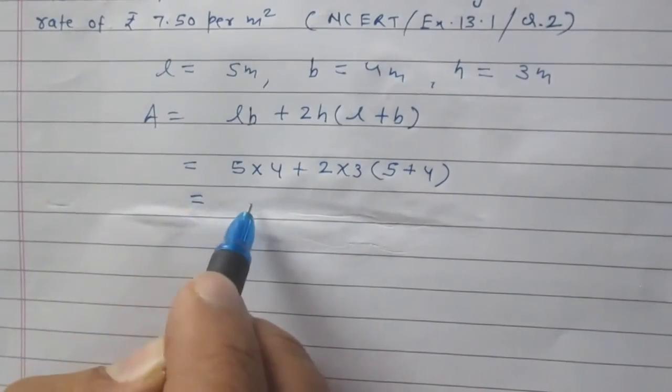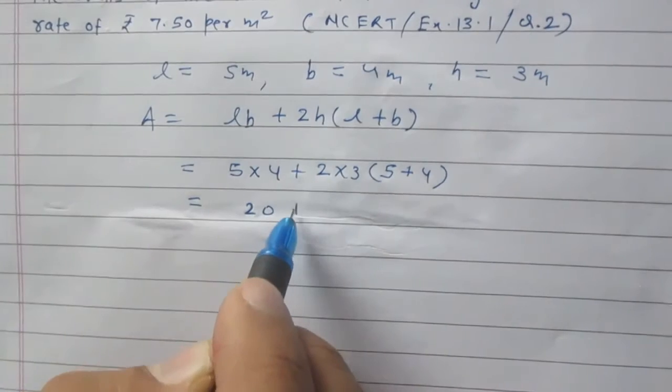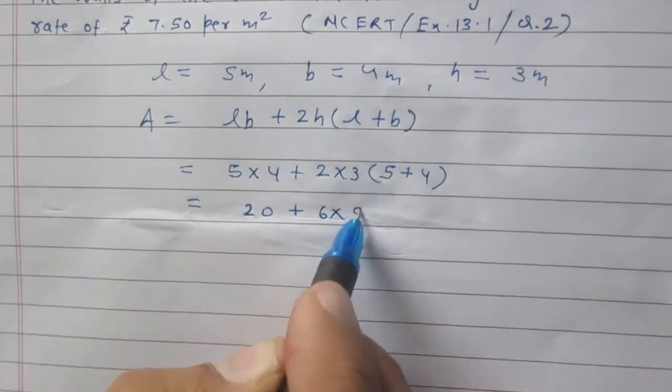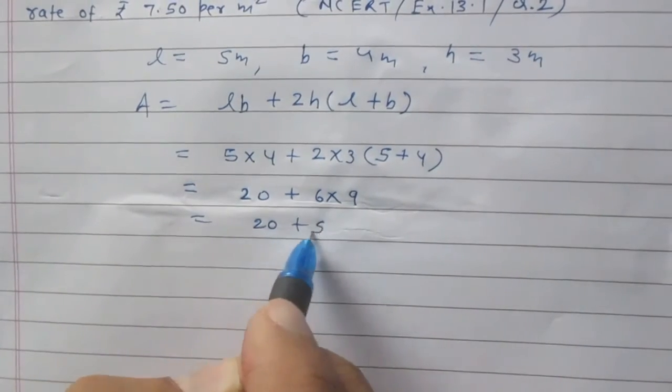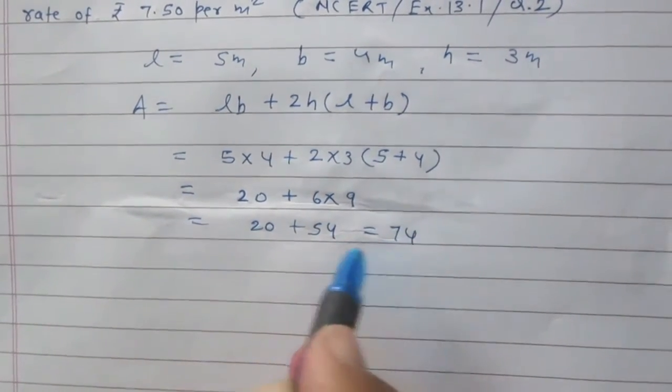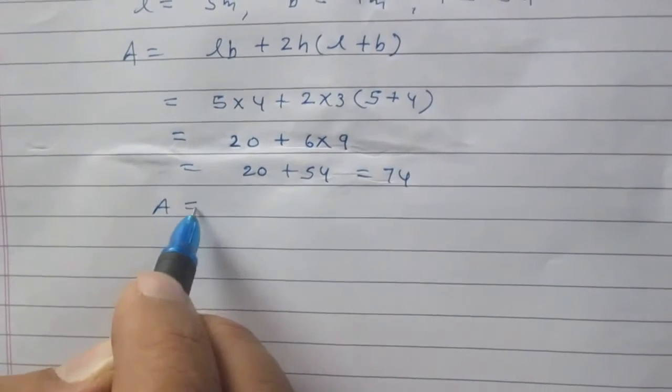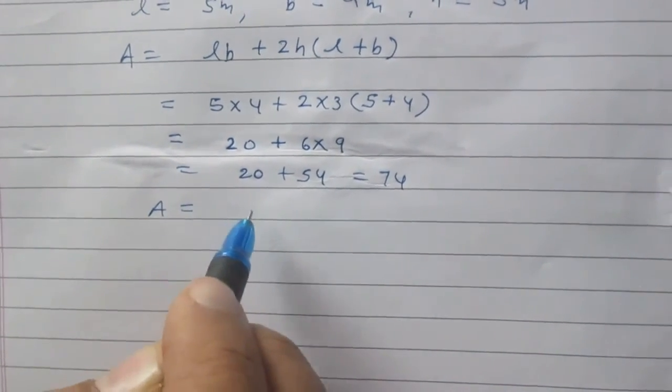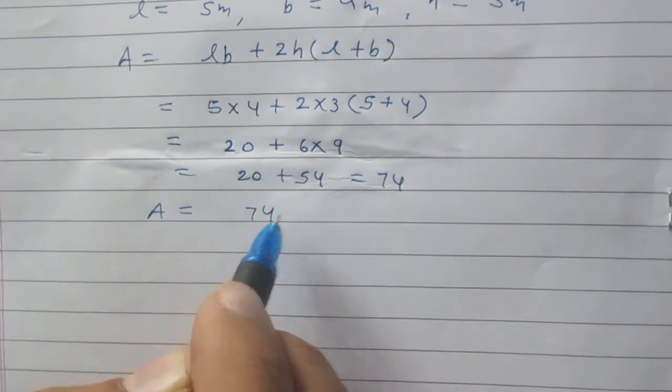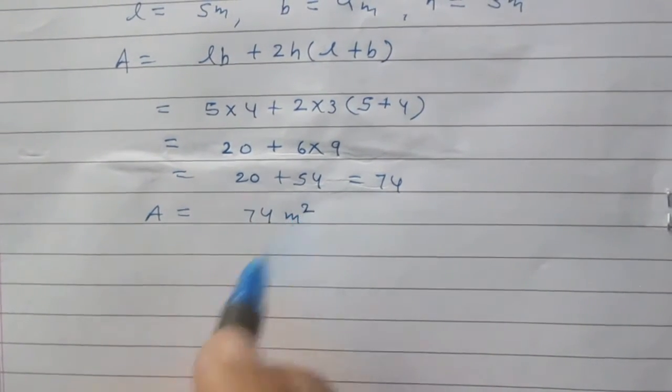So, it is 20 plus 6 multiplied with 9 that is 20 plus 54 and finally we will get 74. So, we can say that area of the room without its floor with its ceiling is 74 meter square.